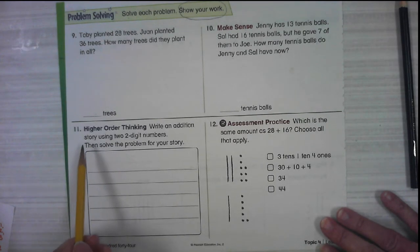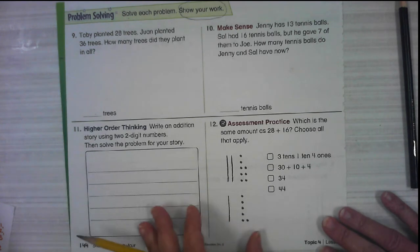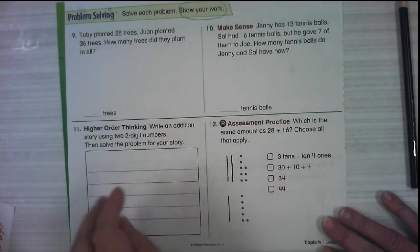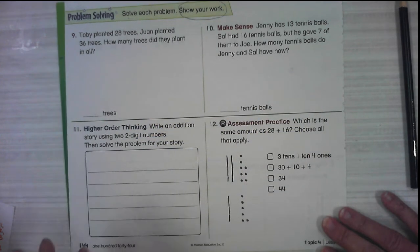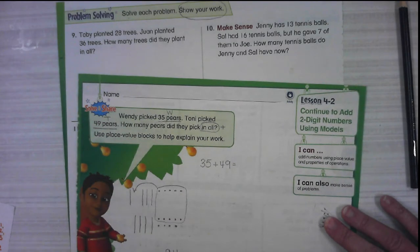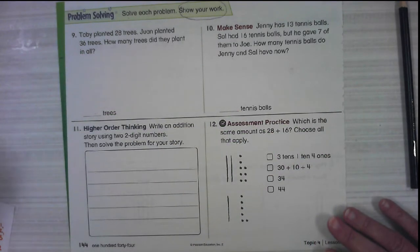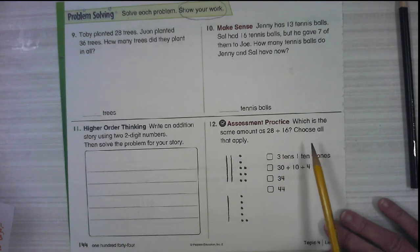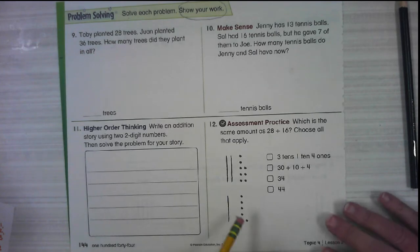Number 11, write an addition story using two two-digit numbers. Then solve the problem for your story. So if you want an example, number nine, number 10, and this one that we did on the front. These are all story problems that use two-digit numbers. And number 12, which is the same as 28 plus 16. Choose all that apply. And they even drew it out for you.